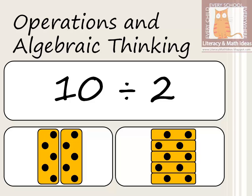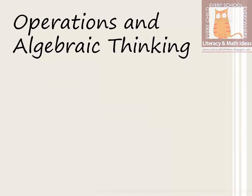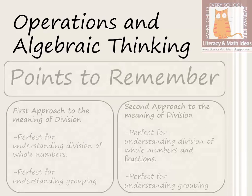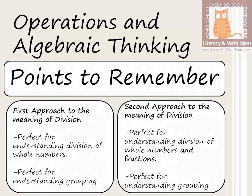In a different context, say there are 10 donuts and you want to package them into groups of two to find out how many packages you'll end up with. The division problem and answer are the same, but the underlying question and context are different. The second approach works well for understanding division of whole numbers, as just demonstrated.